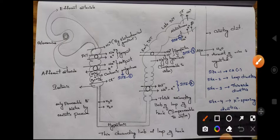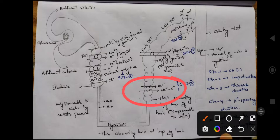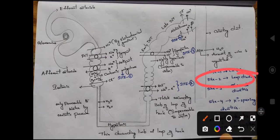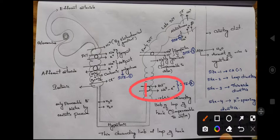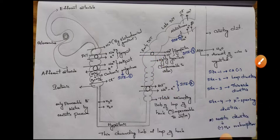This hypertonic fluid then enters the thick ascending limb of the loop of Henle. Here there is a co-transporter called the sodium-potassium-2-chloride co-transporter. In the thick ascending limb, only salts are absorbed — no water reabsorption takes place here. This means chloride ions, sodium ions, and potassium ions are reabsorbed. This is the site where loop diuretics act — they block this co-transporter so that chloride, potassium, and sodium ions are not reabsorbed and are instead pumped out through the urine.